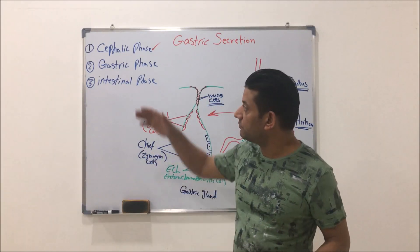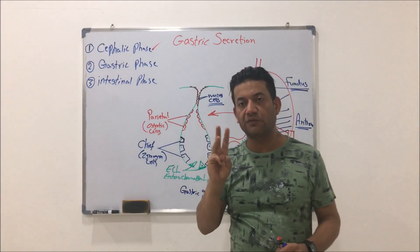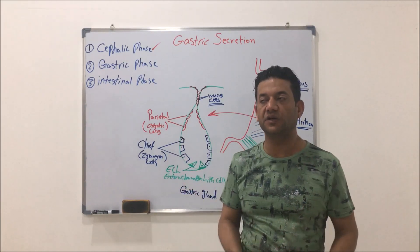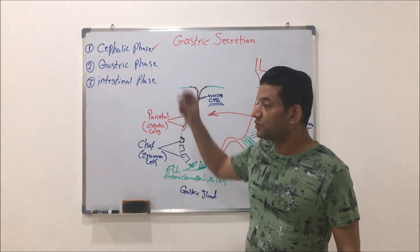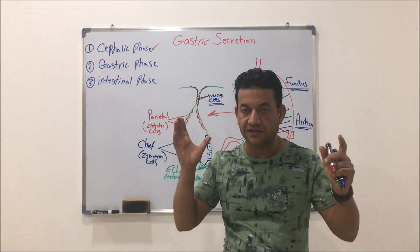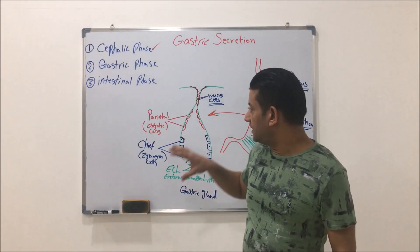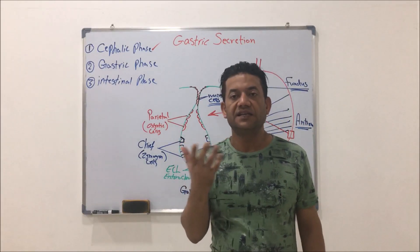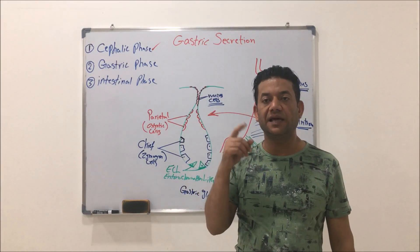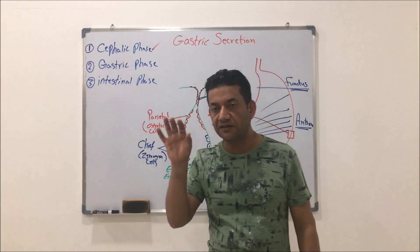الطور الأول في السيطرة على إفرازات المعدة هو السيفالك فيس. من اسمه، كلمة 'سيفالك' مقصود بها الرأس. فالسيفالك فيس يقصد به الطور الذي يحفز المعدة على الإفراز استجابةً للأحاسيس التي منشؤها في الرأس، مثل عندما تفكر في الطعام أو تشم رائحة الطعام.